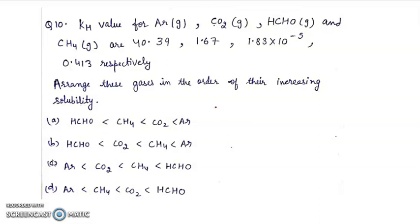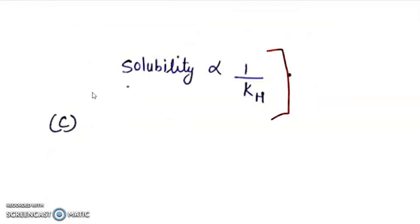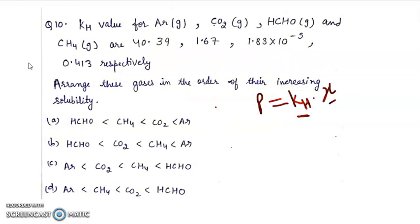We use Henry's law. According to Henry's law, the formula is P equals Kh into X. Kh is Henry's constant and solubility X are inversely proportional. Solubility is inversely proportional to Henry's constant of the gas. That's why the gas with higher Henry's constant will be least soluble. So argon will be least soluble and HCHO will be most soluble. Right answer will be C.